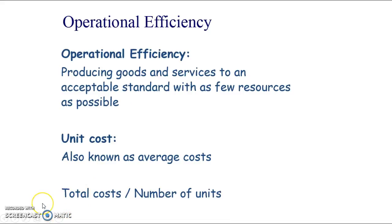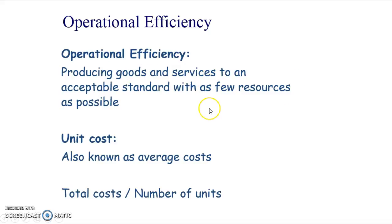If you're good at maths, you'll immediately recognise that to get this number as small as possible, either we have to reduce total costs — the more obvious point — or we need to increase the number of units we make. Produce more goods and services with the resources we already have. So there are two key ways of increasing operational efficiency. That's why motivation can help, because we might be paying employees fixed salaries, and we want them to be as productive as possible so the number of units is greater.